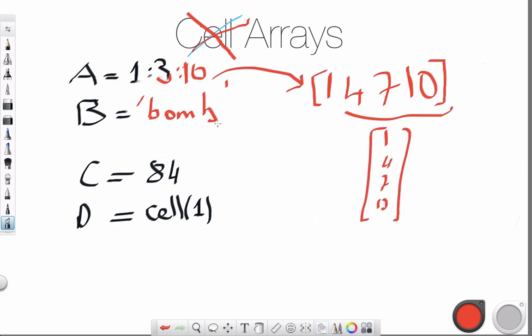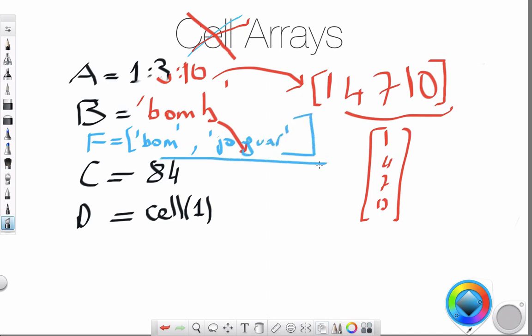Also, this is a character string. You can also define something like this. Let me change the color. So let's say this is B, B could be equal to - let me put the square bracket - bomb, jaguar. These are totally random characters. And you can put the square bracket here, this is a string array. This is how we generate empty cell arrays.